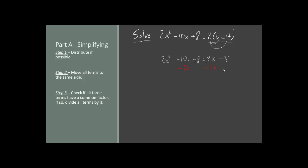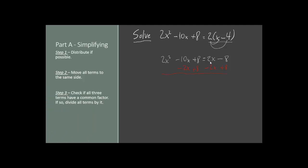Also, we have negative 8, so let's add 8 to both sides. Let's cancel out whatever we can here. Well, 2x and negative 2x cancel out. Negative 8 and positive 8 cancel out, so we have nothing left on the right side — we just have 0.